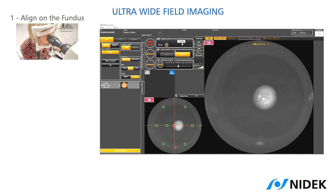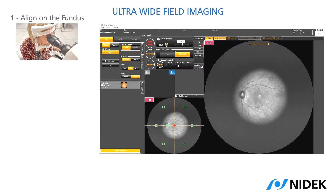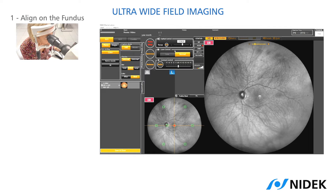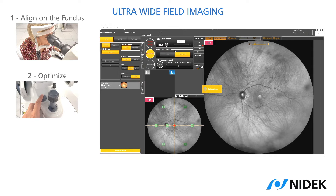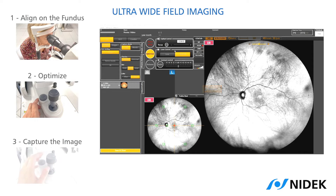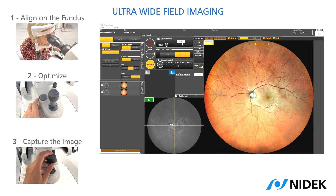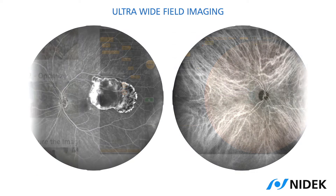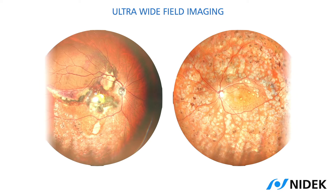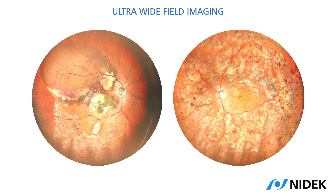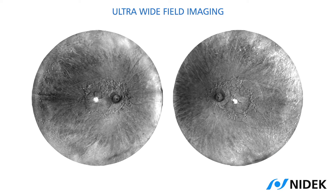As the attachable ultra-wide field lens is more protrudent, one trick to avoid touching the patient is to swing temporarily and tilt inferiorly the optical head. We can then proceed with the optimization of the fundus pictures and the capture. In this very same way, we can also take ultra-wide field fluorescein and indocyanine angiographies, ultra-wide field color images and ultra-wide field retro mode images.